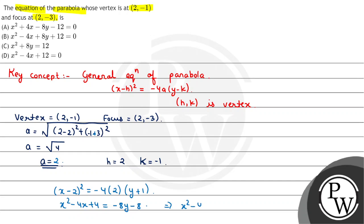We can write this as x² - 4x + 4 + 8y + 8 = 0, which simplifies to x² - 4x + 8y + 12 = 0. This is the required equation of the parabola. So option B, x² - 4x + 8y + 12 = 0, is the correct option. Hope you understood it well, best of luck.